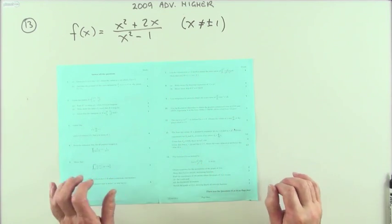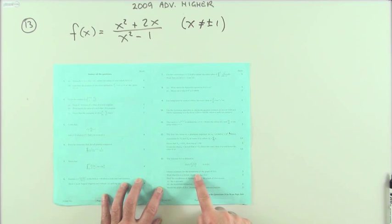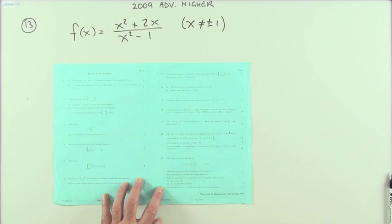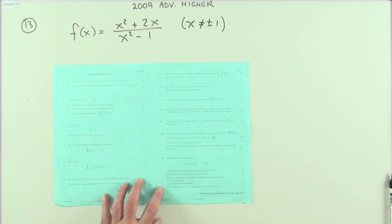So number 13 from the 2009 Advanced Higher, graph of a rational function. What have we got here? Get the equation of the asymptotes, show that it's strictly decreasing, so no stationary points, find where it cuts the axis, also find where it cuts the asymptote, and then sketch it.